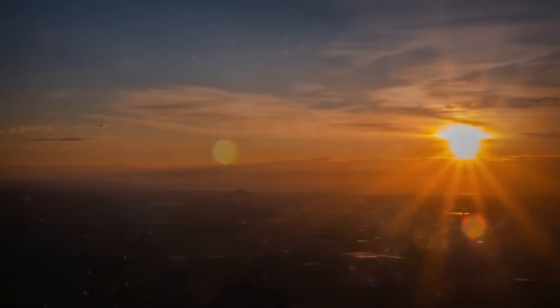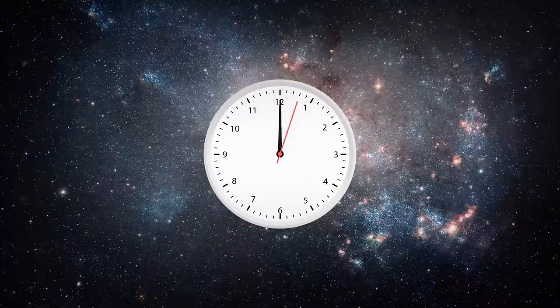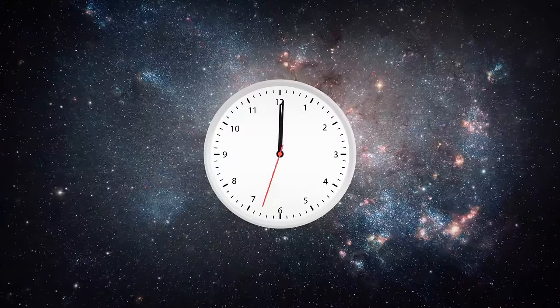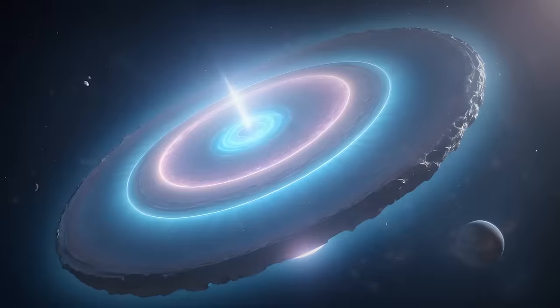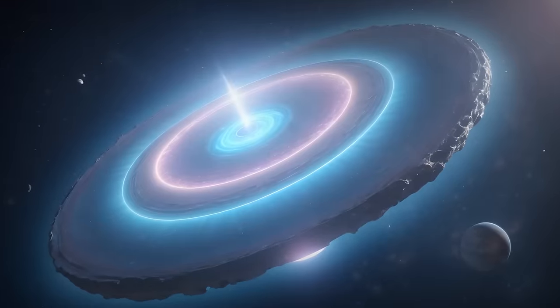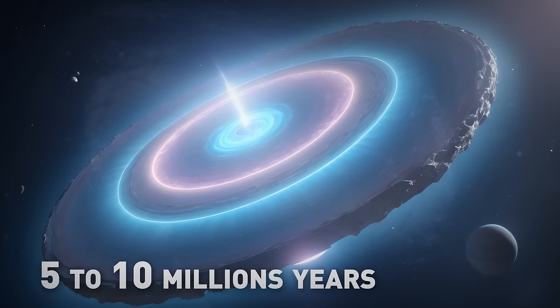Even though it sounds like a really long time for us Earthlings, in astronomical terms it's an incredibly short timescale. For comparison, a protoplanetary disk can live for 5 to 10 million years.